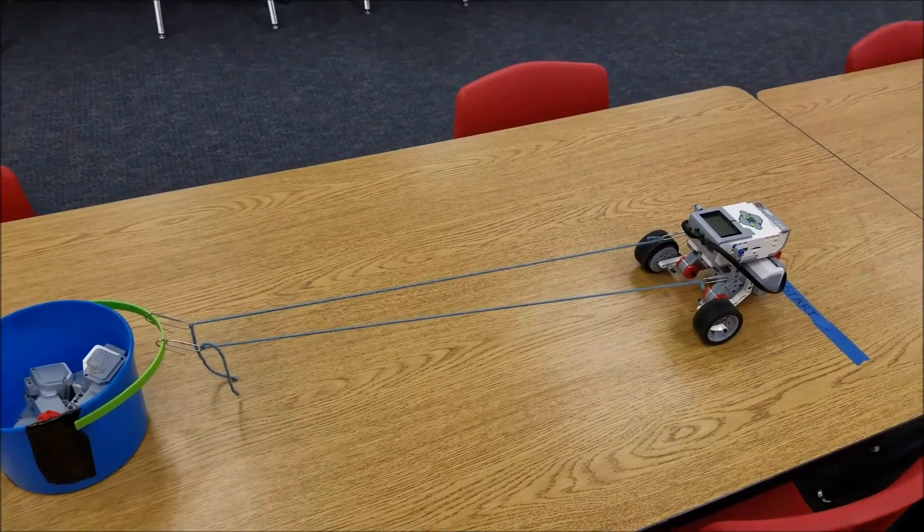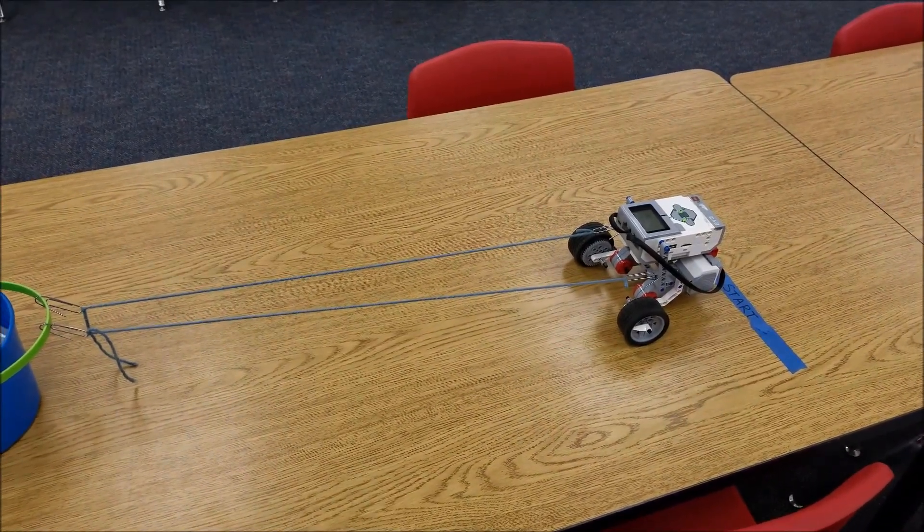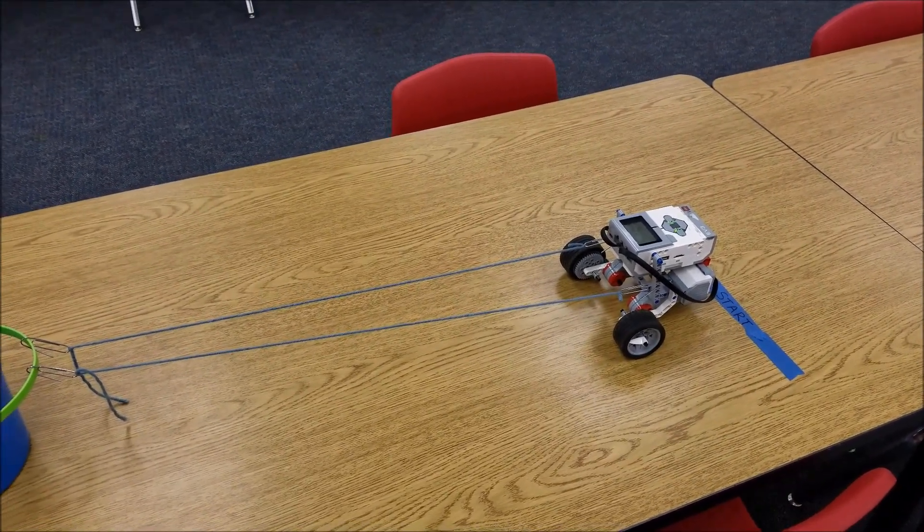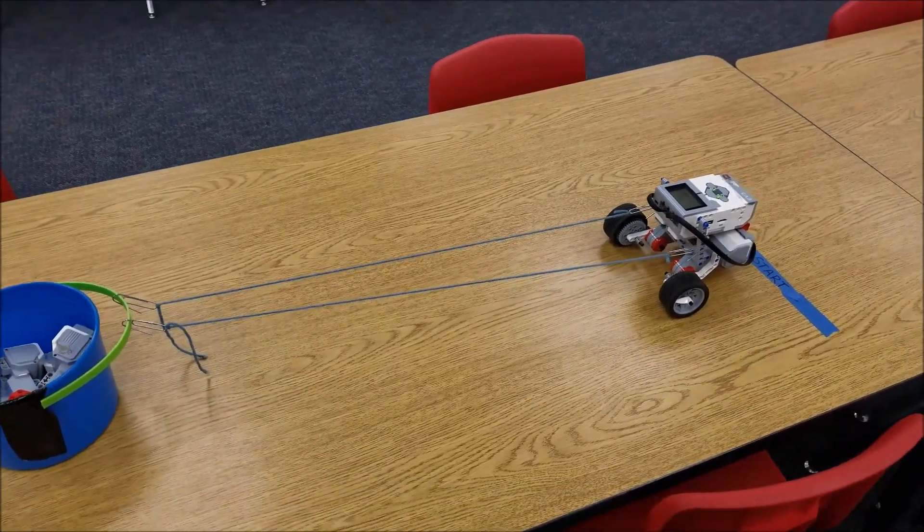So basically what's going to happen is students will build a robot however they want. The rule is just that they can only use what's in their EV3 core kit. They can't use any extra things that don't belong in their kit.